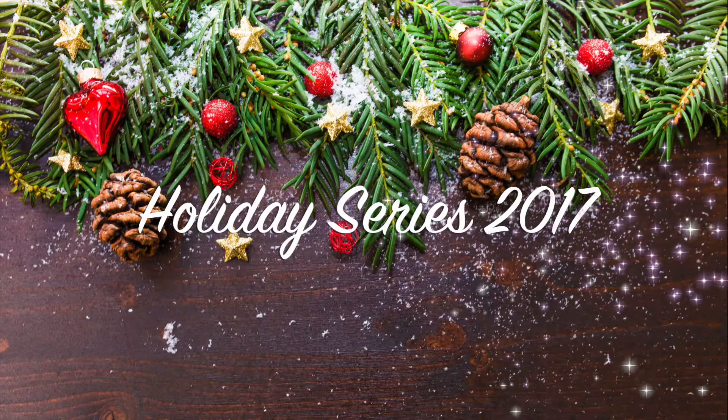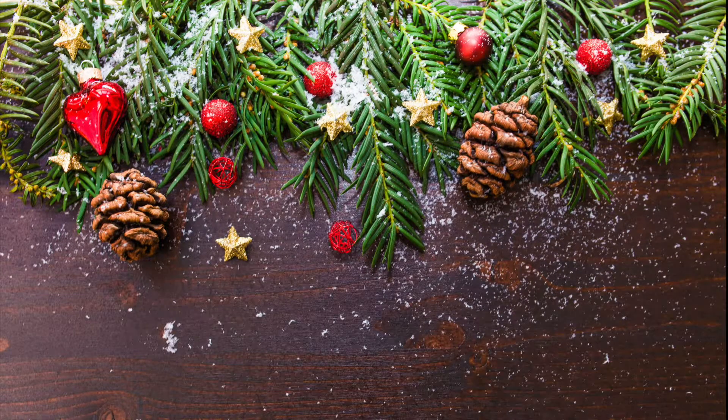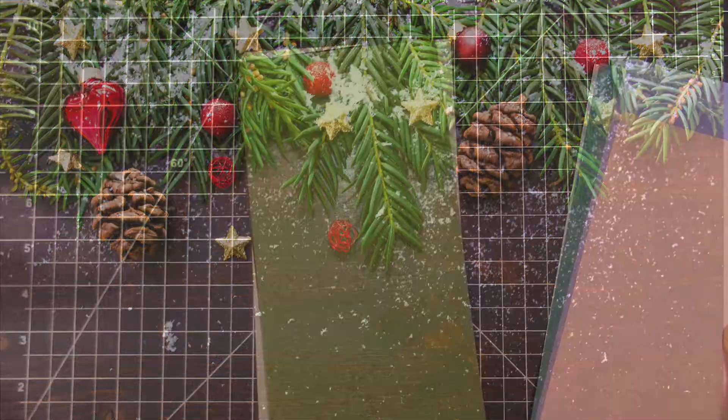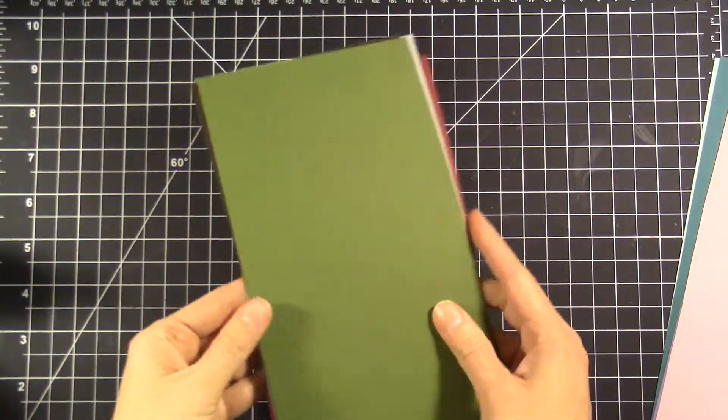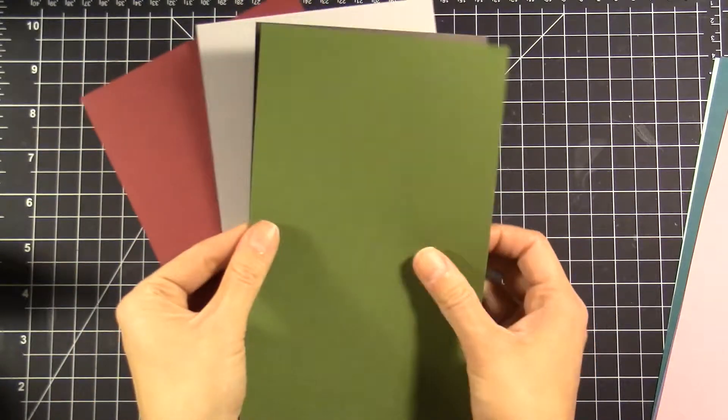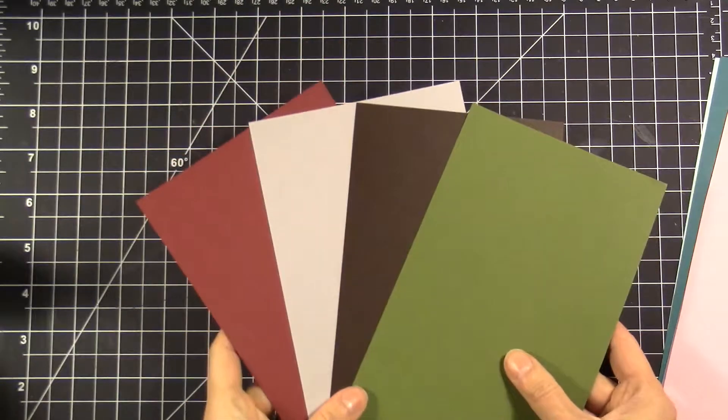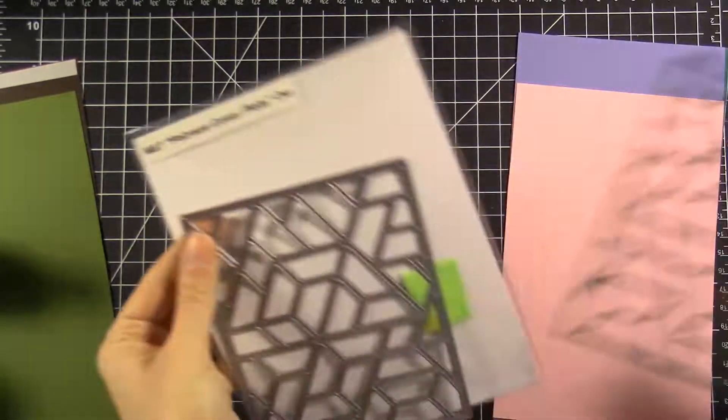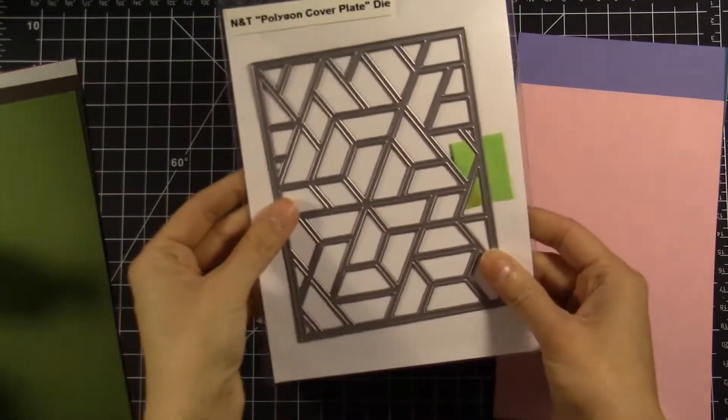Hey everyone, welcome back to the holiday series for 2017, day four. Today I'm focusing on some Neat and Tangled products, specifically to create a set of four holiday themed cards. I first picked out some traditional holiday colors: red, green, gray, and brown. This is just some basic cardstock, nothing fancy.